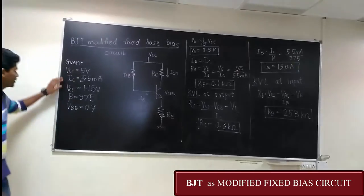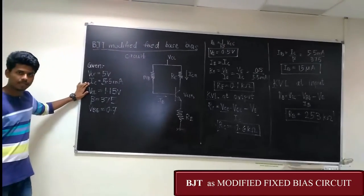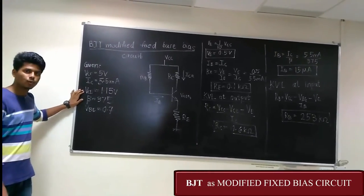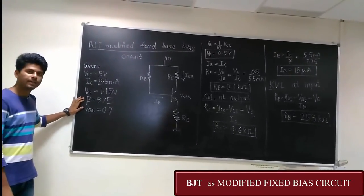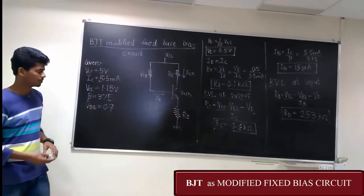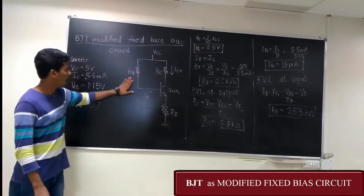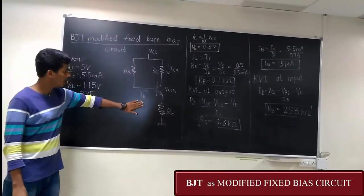The given values are VCC is equal to 5 volt, IC is equal to 5.5 milliamp, VCE is equal to 1.15 volt, Beta value is 375 and VBE as we know is 0.7. Now we have to find the values of RE, RB, RC and IB.